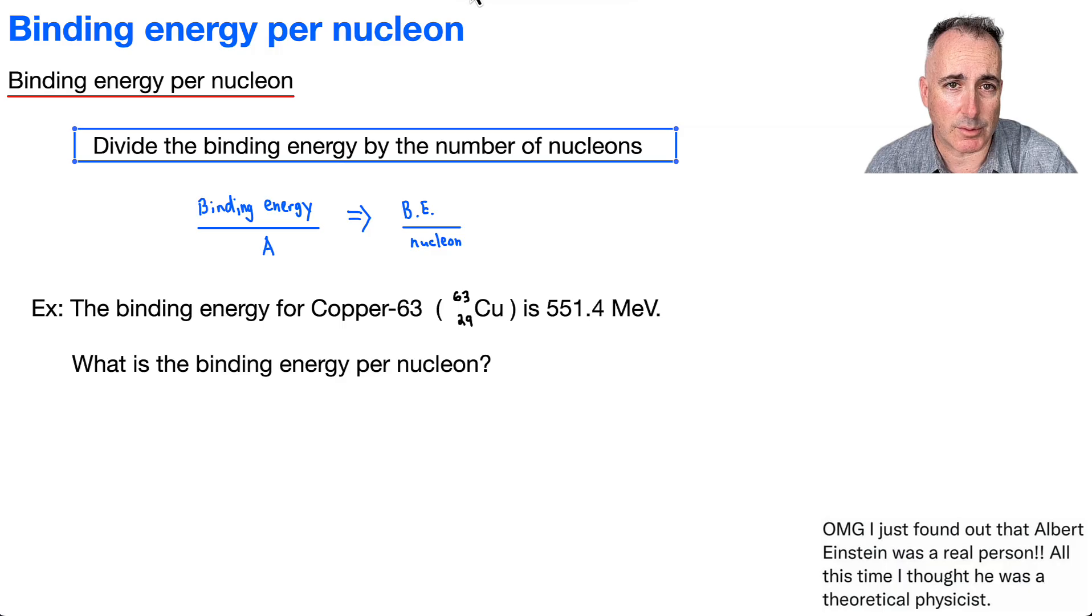So you could say it's the A number. Remember, because if you go like this here, it's X and it goes A and Z. So this A is this top number right here. Or you can just call it BE over a nucleon. And you'll see different versions, but it's all the same thing.